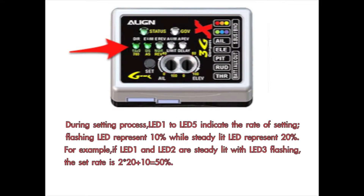During the setting process, LED 1 to LED 5 indicate the rate of setting. A flashing LED represents 10%, while a steadily lit LED represents 20%. For example, if LED 1 and LED 2 are steadily lit with LED 3 flashing, the set rate is 2 times 20 plus 10, which is equal to 50%.